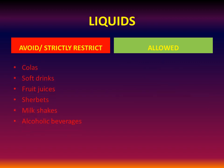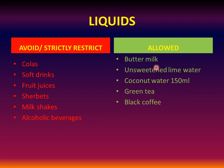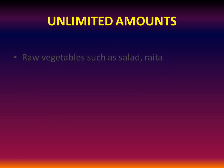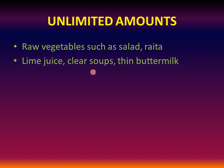Liquids: avoid colas, soft drinks, fruit juices, sherbets, milkshakes, and alcoholic beverages. Allowed are buttermilk, unsweetened lime water, coconut water (about 150 ml per day), green tea, and black coffee. Unlimited amounts include raw vegetables such as salad and raita (but don't include beetroot), lime juice, clear soups, and thin buttermilk.